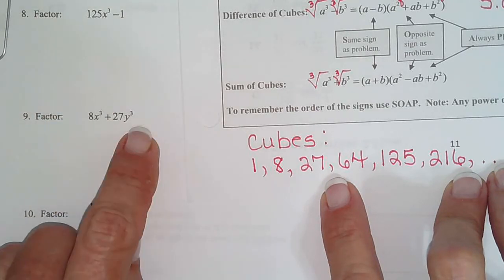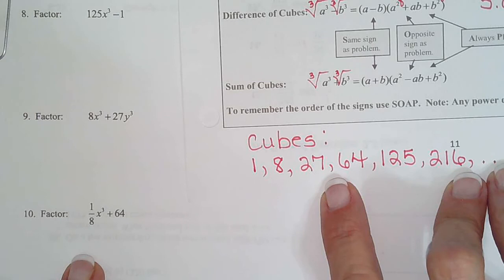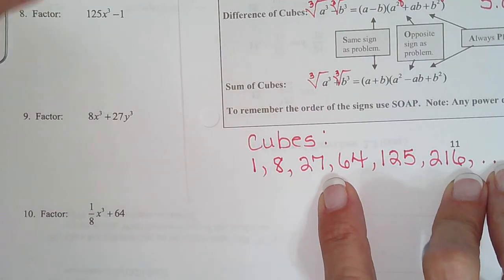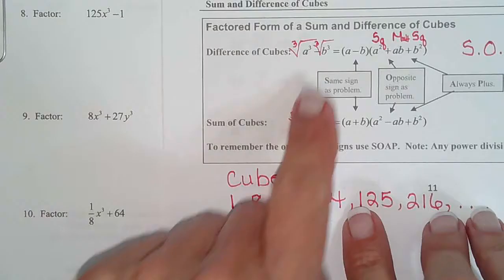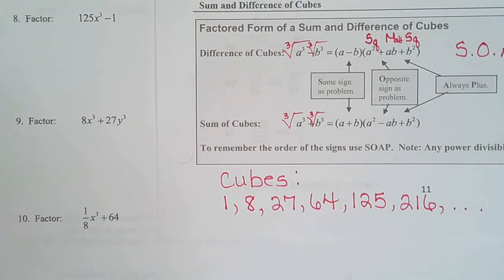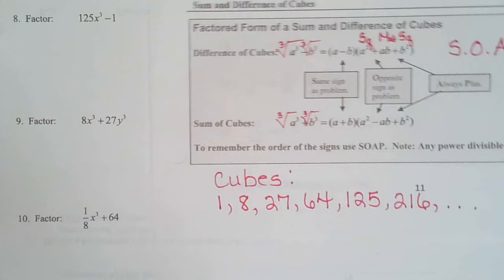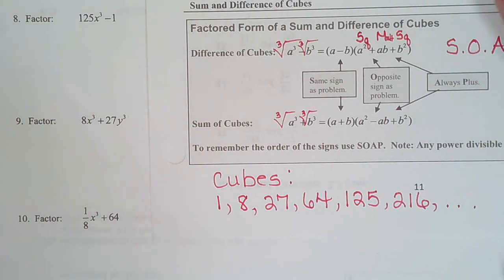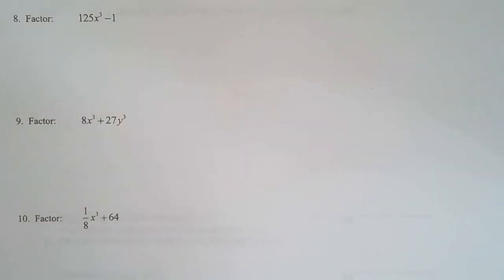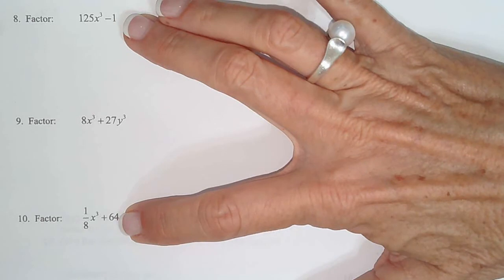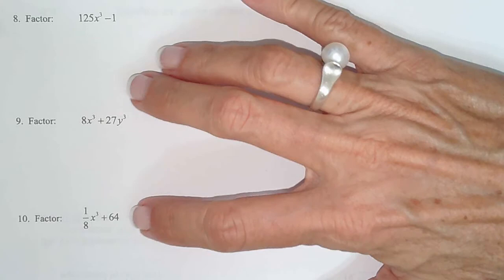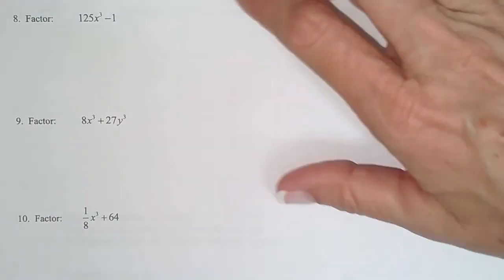And notice all the exponents. 3, 3, 3, 3. So, all of those are cubes. And remember, on cubes, it doesn't matter whether it's plus or minus. They both factor. See, we have factoring patterns for both. So, we don't have to check and make sure it has a minus sign like on the squares. So, how about we do 8 and 10 and then I'll let you do 9. So, we'll skip 9 and we'll do 8 and 10 because I want us to practice a couple.